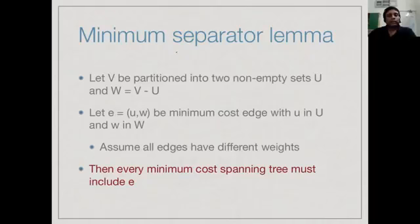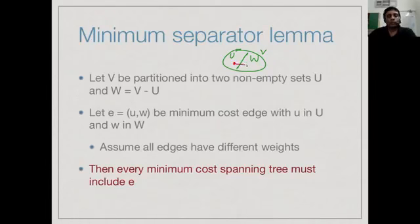Once again we will use the same result used for Prim's algorithm: the minimum separator lemma. Recall what the lemma said: if we take our set of vertices and separate them into two non-empty groups U and W, and take the smallest edge connecting the two parts together, then this edge must appear in every minimum cost spanning tree. This is what the lemma says.